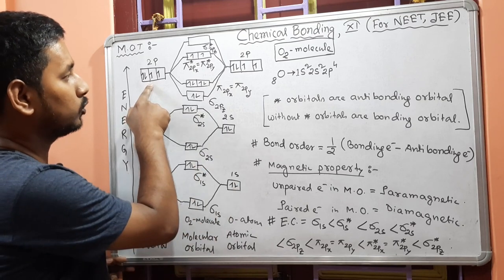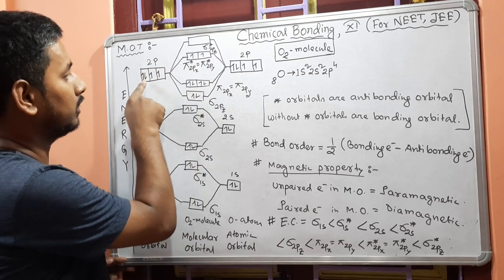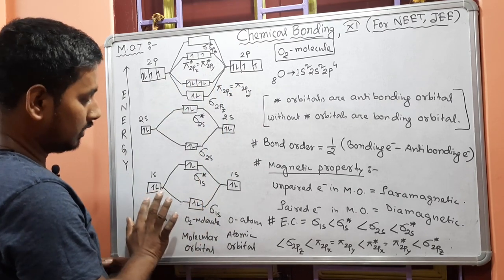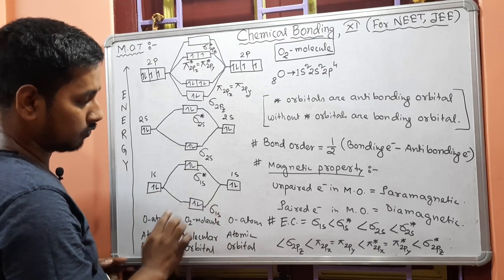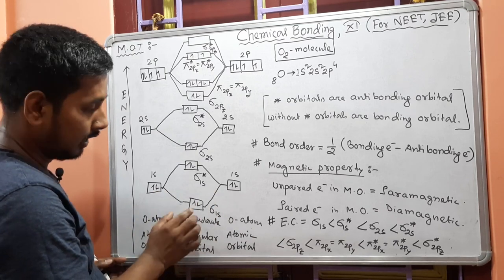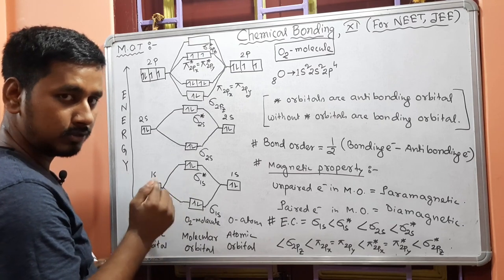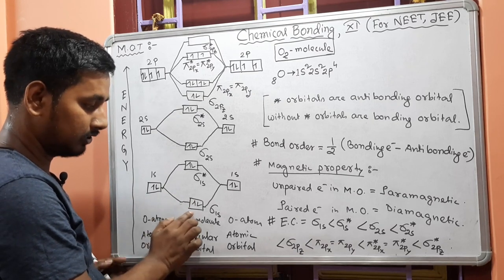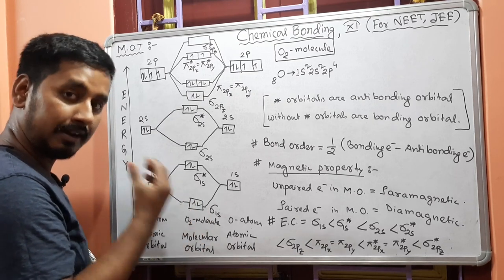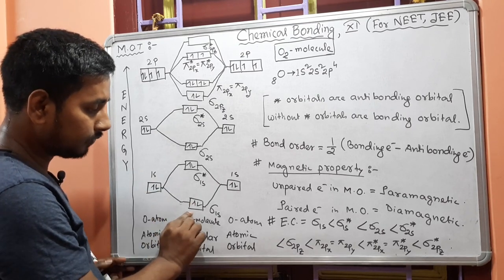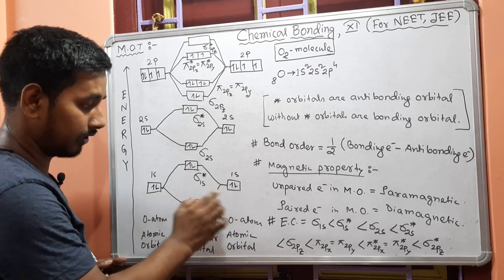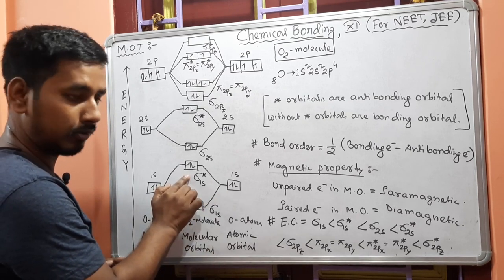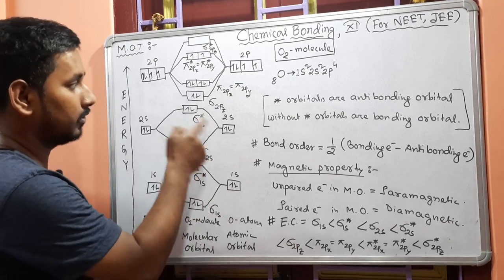For another oxygen atom: 1s² 2s² 2p⁴. In 2p you give four electrons from each atom — so 1, 2, 3, 4 from each. The bonding molecular orbital has lesser energy than the atomic orbital, and the anti-bonding molecular orbital has higher energy than the atomic orbitals.